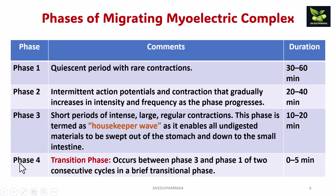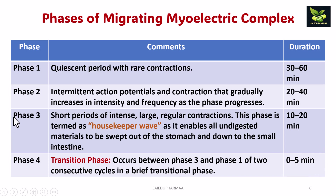There is one more phase — Phase 4, called the transition phase. It occurs between Phase 3 and Phase 1 of two consecutive cycles, with a brief duration of 0 to 5 minutes. This is very important to know about the Migrating Myoelectric Complex — it works efficiently in the fasting state.